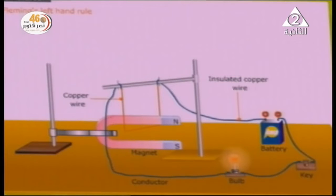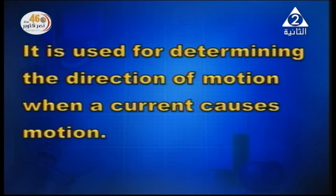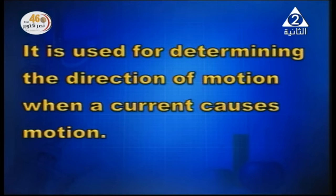To determine the direction of the force — to determine the direction of motion — we use Fleming's left-hand rule. Fleming's left-hand rule is used for determining the direction of motion when a current causes motion. It means we've got a wire placed in a magnetic field, and a current is passed through the wire and the wire moves — we call it current-causes-motion. We use Fleming's left-hand rule to determine the direction of motion or direction of the force of the magnetic field that acts on the wire.